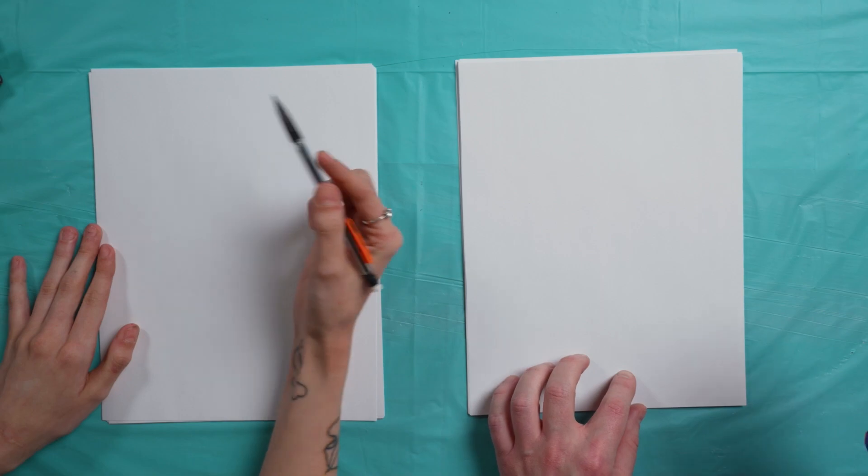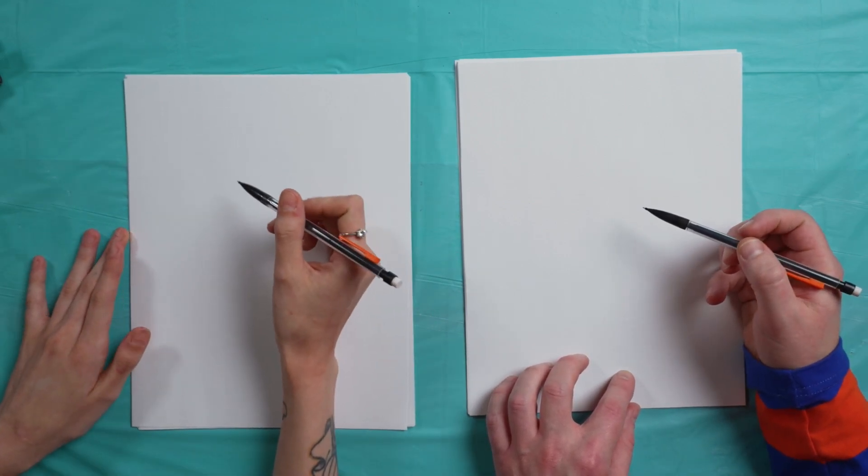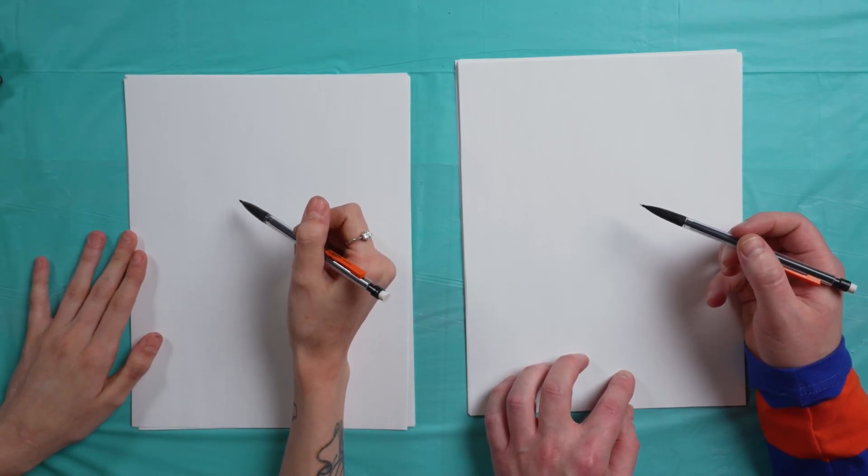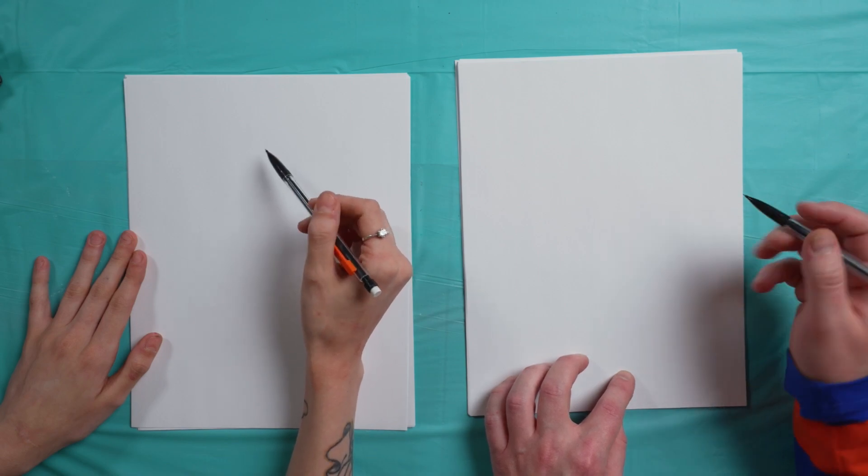We're going to start with our pencil sketch so we can kind of rough it out, make mistakes, and erase as we need to before we do the line art and marker.